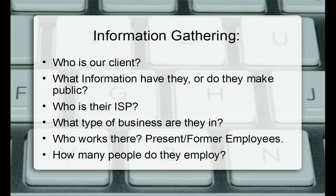Social engineering plays a very big role in network security auditing. You also want to know how many people they employ. Check their website for phone extensions — if Mary's at extension 101, Bob at 102, Jim at 103, you get a pretty good gauge of headcount. That helps you understand the network setup. Three people probably means a small workgroup network; 20–100 employees may mean multiple domain controllers or Windows servers.